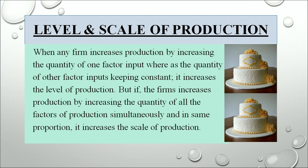The third concept in the production function is the level and scale of production. When any firm increases production by increasing the quantity of one factor input while the quantity of other factor inputs remains constant, it increases only the level of production. But if the firm increases production by increasing the quantity of all factors simultaneously and in the same proportion, it will increase the scale of production. The level of production relates to the short run, whereas the scale of production relates to the long run.